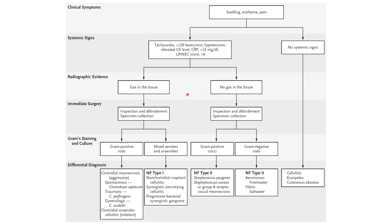On imaging, they can see if gas is present. That's done very early because if gas is seen, that essentially points us toward clostridial species. If there is no gas, that's more likely to be streptococci and other organisms. If no gas is seen, we still need surgical evaluation, incision, debridement, and a specimen collected for culture and susceptibility.